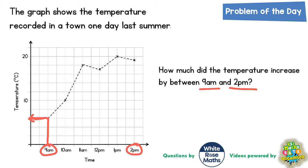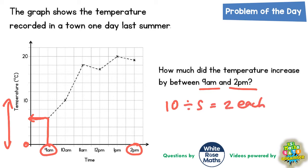Well, if we put a 0 along the bottom, there are 5 squares between 0 and 10. So what we actually need to do is split that gap of 10 into 5 squares. 10 split into 5 squares would mean 2 for each square.